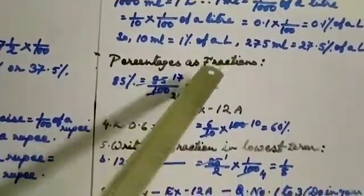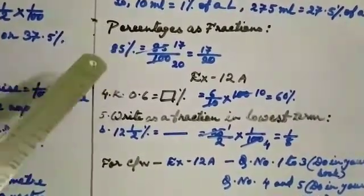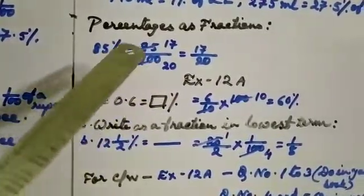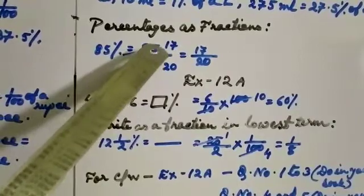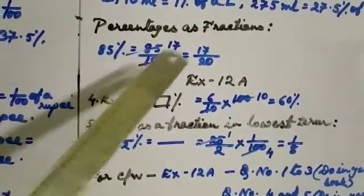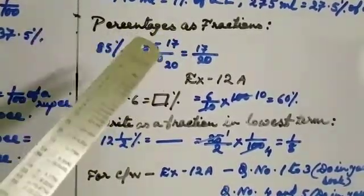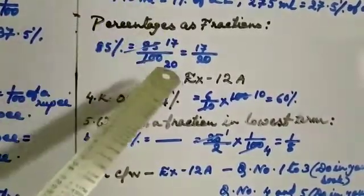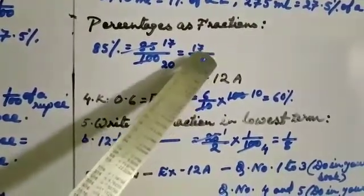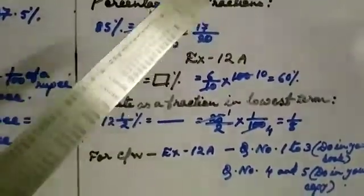Now, percentage as fractions. Suppose you have a number as a percentage and you have to change it into a fraction. For example, 85 percent is equal to 85 by 100. Now reduce it to lowest terms: 5 into 17 is 85, and 5 into 20 is 100, giving 17 by 20. You have changed 85 percent into a fraction.